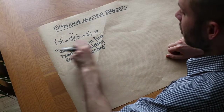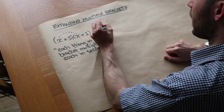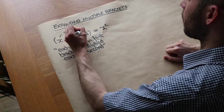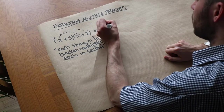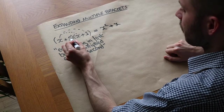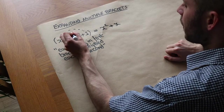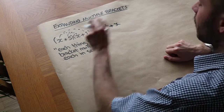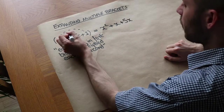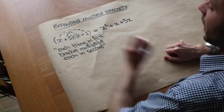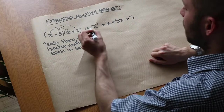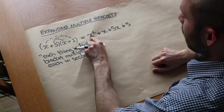For example, the first term times the first term: x times x gives us x squared. Another combination is the first thing from the first bracket times the second thing from the second bracket: x times 1, which is just x. Then the second thing from the first bracket times the first thing from the second: 5 times x is 5x. And finally, 5 times 1 is 5.